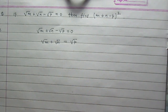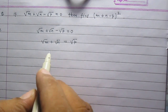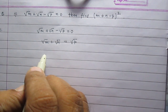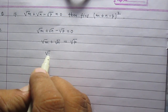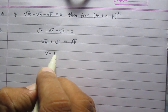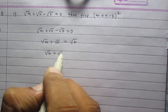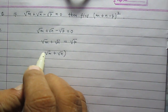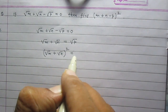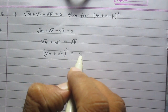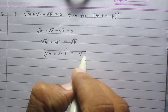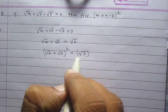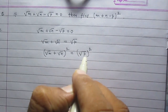Now we can square both sides. After squaring both sides we will get square root of m plus square root of n whole square is equal to square of square root of p.